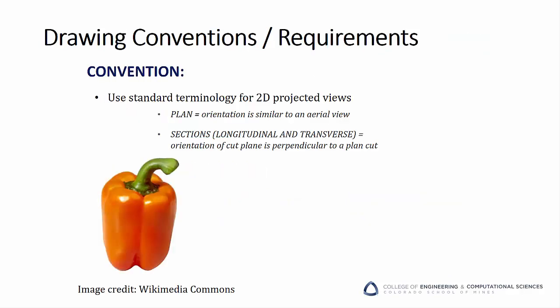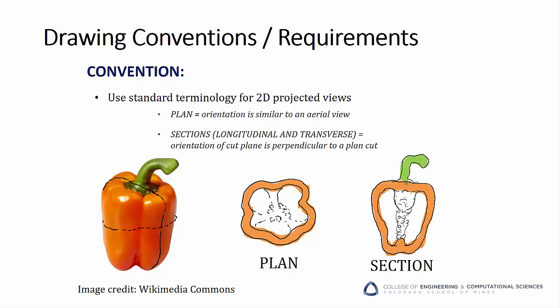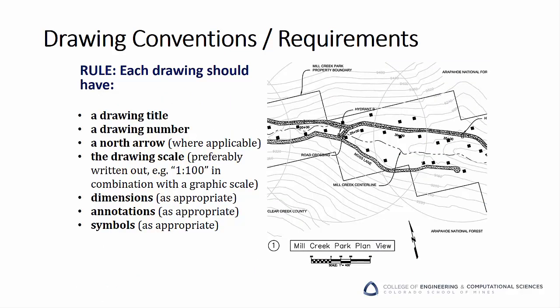It's also important to use standard terminology for your views. Plan and section views have a standard definition. A plan view is similar to an aerial view — for our pepper example, the plan view would look like a horizontal slice of the pepper. A section view is oriented 90 degrees from the plan view and cuts a vertical slice of the pepper. Note you can have both longitudinal and transverse sections depending on which vertical plane we consider. When you show a section view, you may want to use heavy lines or solid fill to distinguish between portions that are cut versus portions that are background. Once you've determined your views, make sure that each drawing is complete — a complete drawing will have a title, number, a north arrow, the drawing's scale, and dimensions, annotations, and symbols as appropriate.